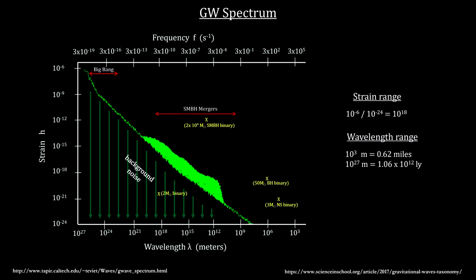Here's the range for supermassive black hole mergers. They produce a huge burst of gravitational waves at millihertz frequencies, detectable throughout most of the known universe.